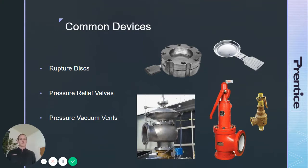Rupture discs are a non-reclosing device — once they're open, you have to replace them. Relief valves are what you're going to see at the top of a boiler, and pressure vacuum vents are used most often on storage tanks when the set pressure is below 15 pounds gauge. We'll talk about why the line is drawn at 15 pounds.